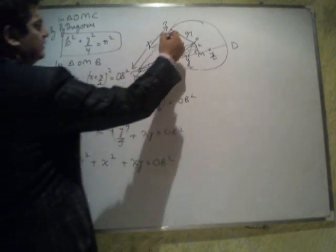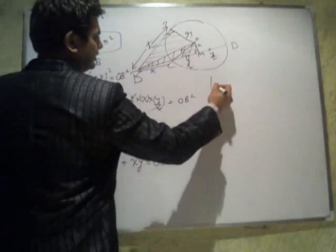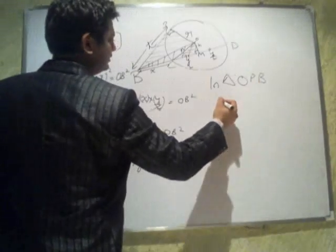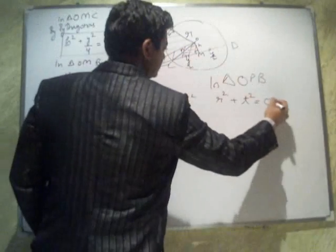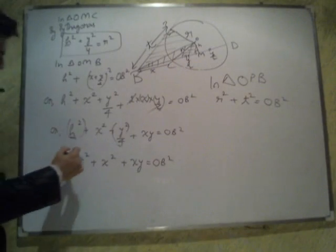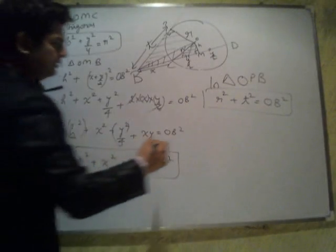Now, if you see this triangle, in triangle O, P, B, R square plus T square is supposed to be B square, OB square. That means this and this can be equated.